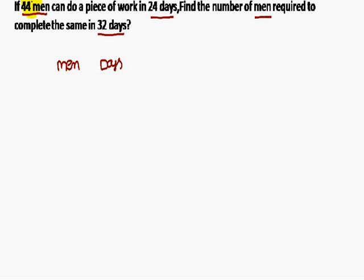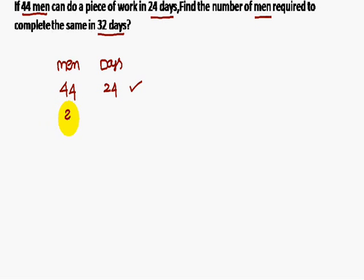For the first statement: 44 men are there, and 24 days are there. For the second statement, find the number of men required — that is the question mark — to complete the same work in 32 days.